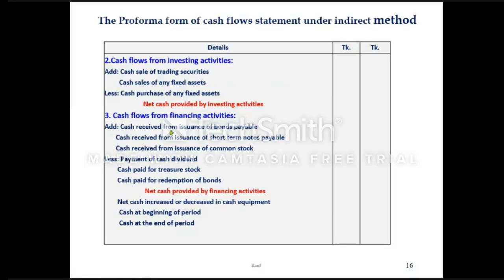Third: Cash Flow from Financing Activities — cash receipt from issuance of bonds payable, cash receipt from issuance of short-term notes payable, cash receipt from issuance of common stock, and less: payment of cash dividends, cash paid for preference stock, cash paid for redemption of bonds. These are the three activities. Please see.